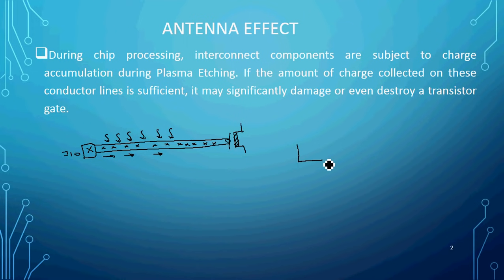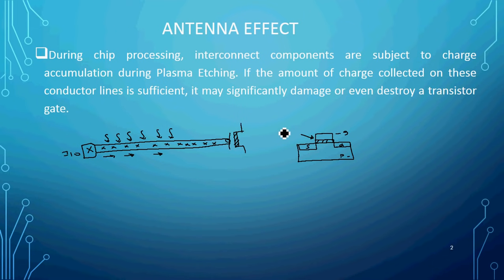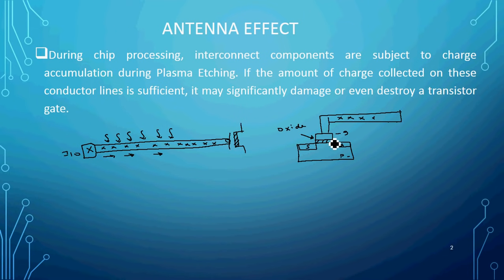To understand this more clearly, let us look at the cross-sectional view of a MOSFET. This is the cross-section: source terminal, drain terminal, substrate (P-substrate), gate oxide, and above it the gate terminal. Whenever the lengthy metal is routed to the gate area, charges are induced, come and hit the gate metal, and the gate oxide will be permanently damaged. Do you know why particularly the gate oxide is getting damaged? I will tell you the reason.